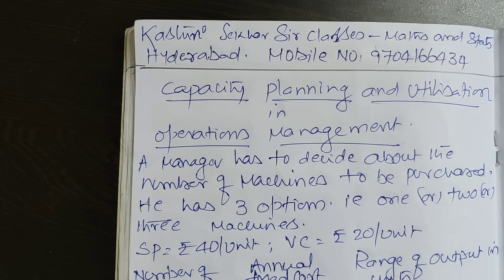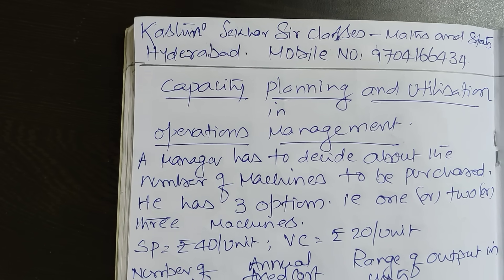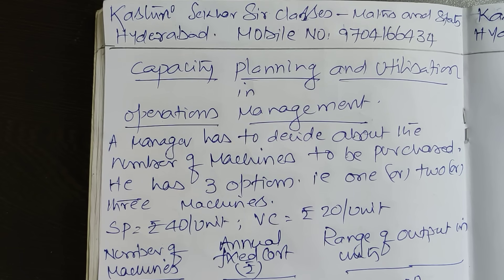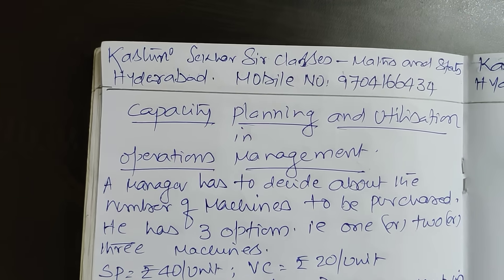So, to satisfy the market demand, we need some machine hours for producing the product. How many machine hours are required, and to generate that many machine hours, how many machines are required — these are the two key points in this chapter.